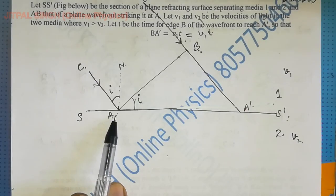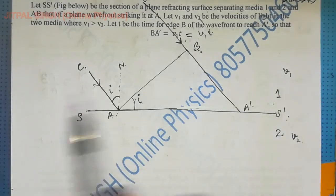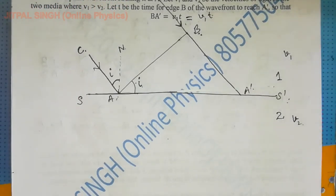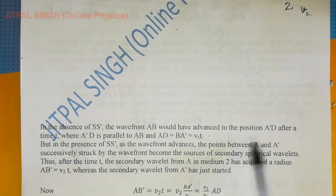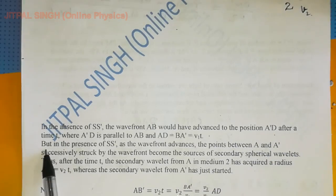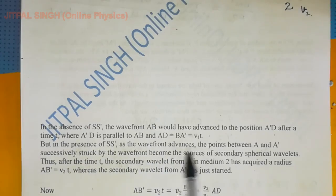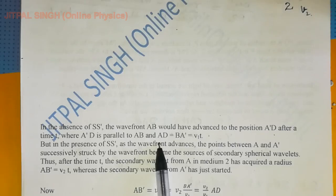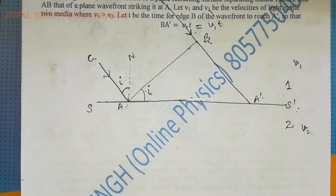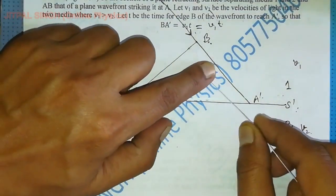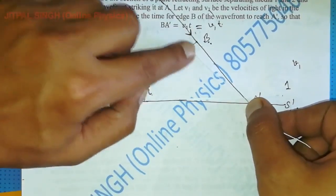There are two situations we have to consider: first, SS' absent, and second, SS' present. In the absence of SS', the wavefront AB would have advanced to position A'D after time t, where A'D is parallel to AB and AD = BA' = v1·t. To find point D, I'll measure the distance from B to A' using this thread.